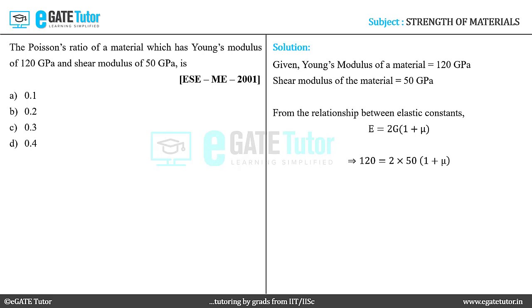Upon simplifying this equation, we get the Poisson's ratio as mu = 0.2. Therefore, the correct answer to this question is option B.